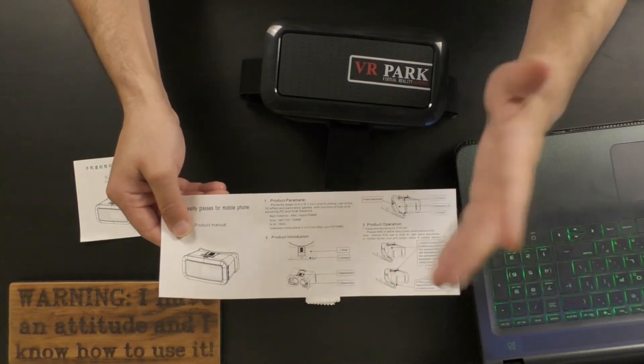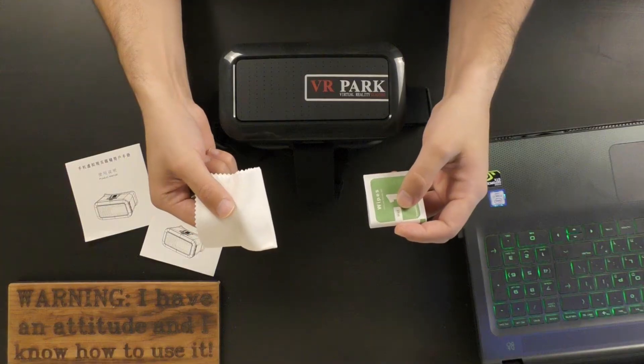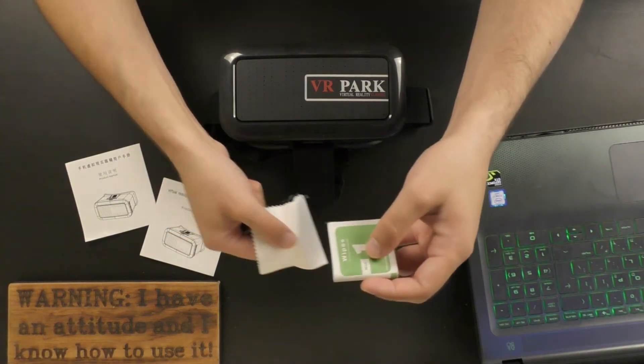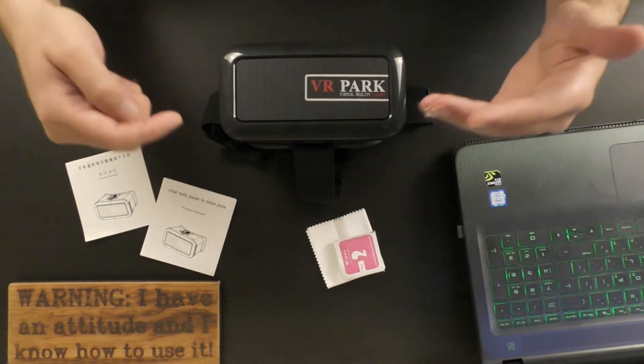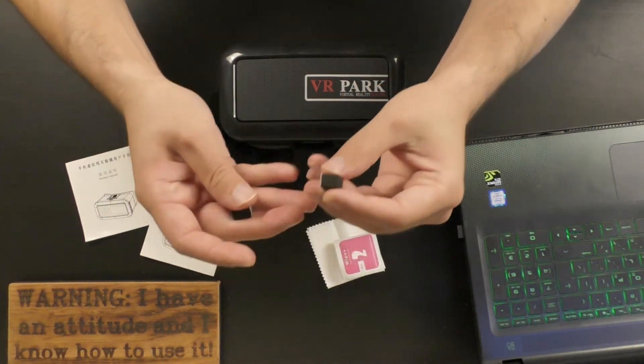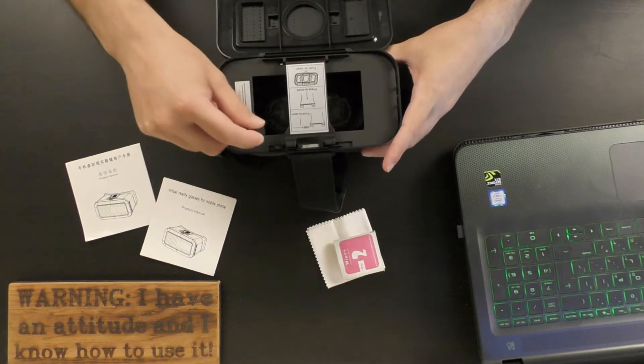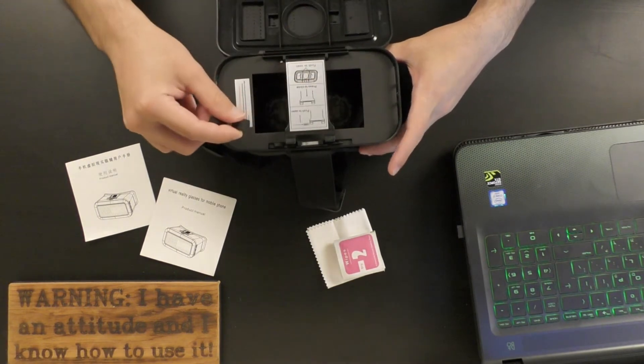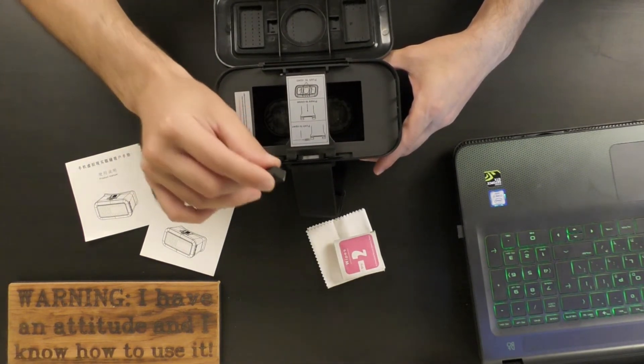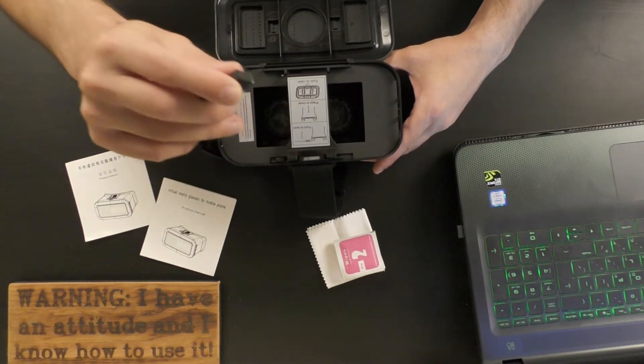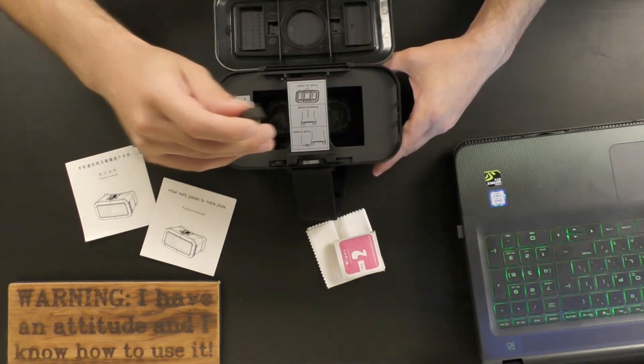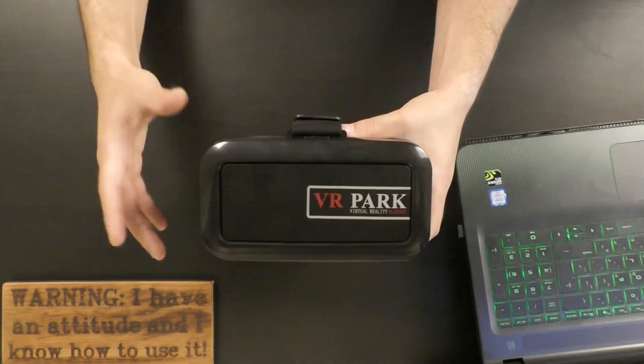Also included: this cloth and these wipes, wet one and dry one, to clean the lenses of these VR glasses, and two little sponges. These little sponges you're supposed to stick inside the front panel so you will be able to adjust it to the size of your smartphone screen so it won't move when it's inserted inside the VR Park VR glasses.